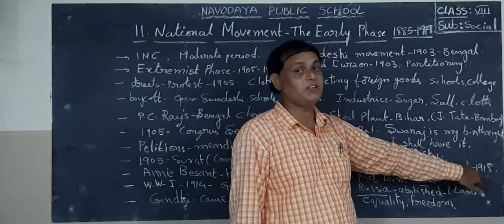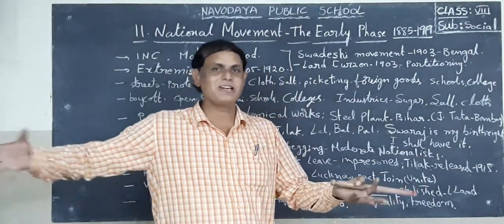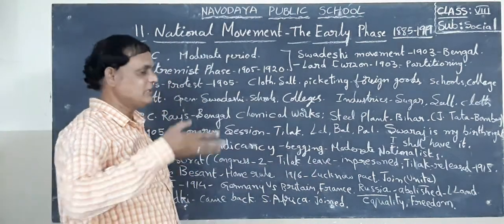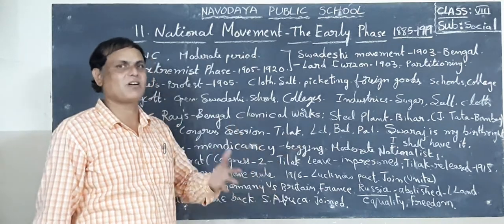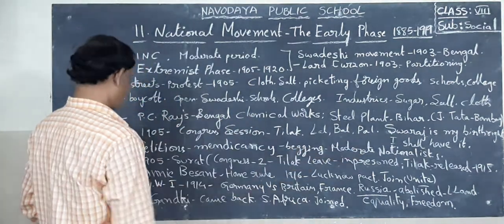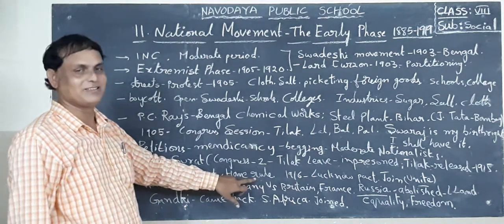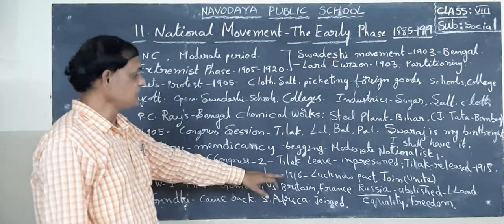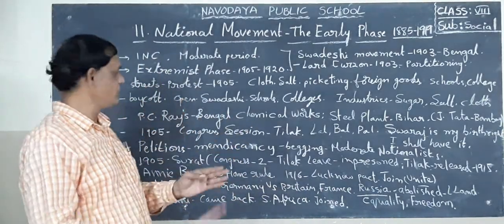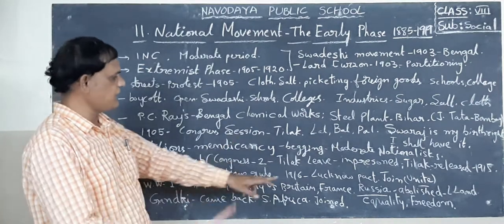Tilak was released in 1915. He was imprisoned and then released in 1915. When Tilak was released from jail, many people came and joined with him. With the help of all the people, Tilak performed many rallies, lectures, speeches throughout India - mobilizing all people with his powerful speech. He joined with Annie Besant, who started the Home Rule League. In 1916, the Lucknow Pact united the split Congress back into one.